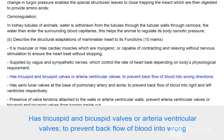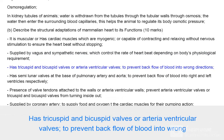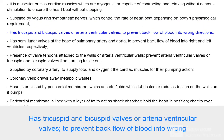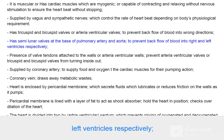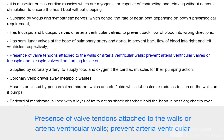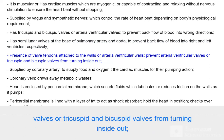The heart has tricuspid and bicuspid valves, or atrioventricular valves, to prevent backflow of blood into wrong directions. It has semilunar valves at the base of the pulmonary artery and aorta to prevent backflow of blood into the right and left ventricles respectively. Valve tendons are attached to the atrioventricular walls to prevent the atrioventricular valves from turning inside out.